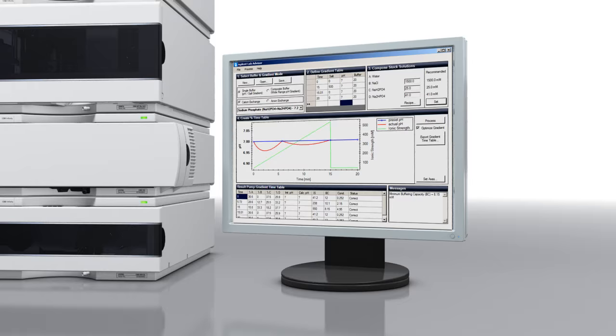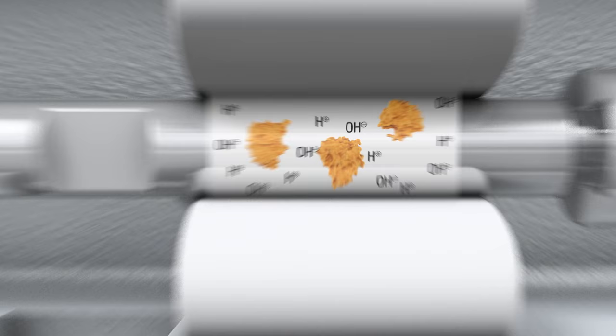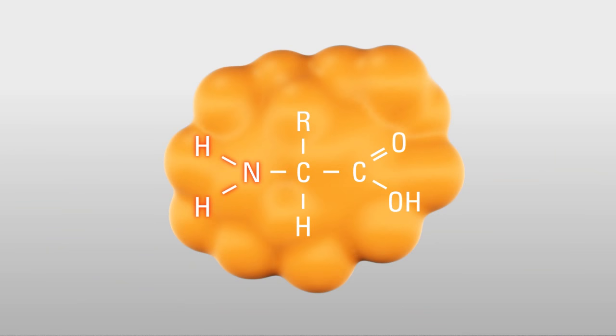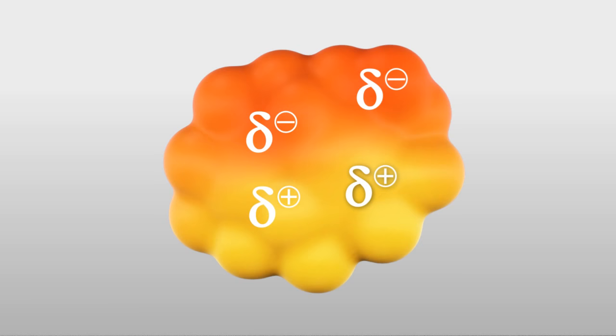A typical application of ion exchange chromatography is the analysis of proteins. Buffer systems ensure that the proteins remain in their native states. Proteins consist of amino acids. Their amine and carboxylic acid functional groups make them ampholytes or zwitterions.